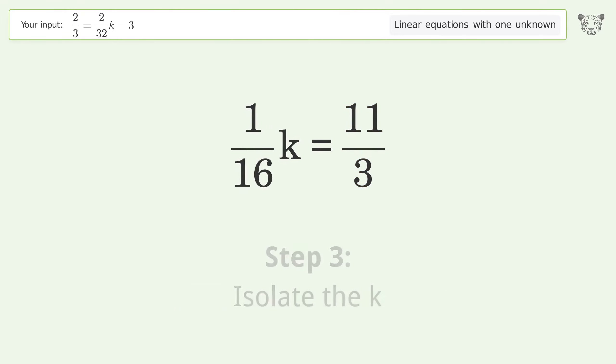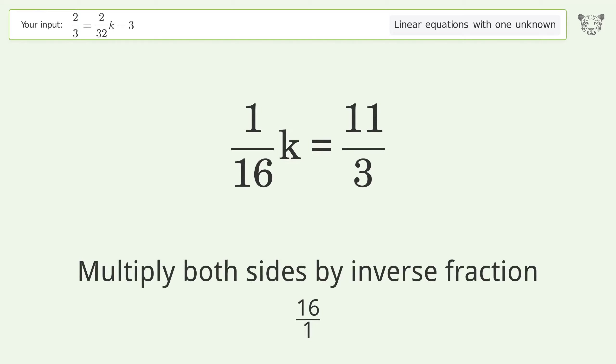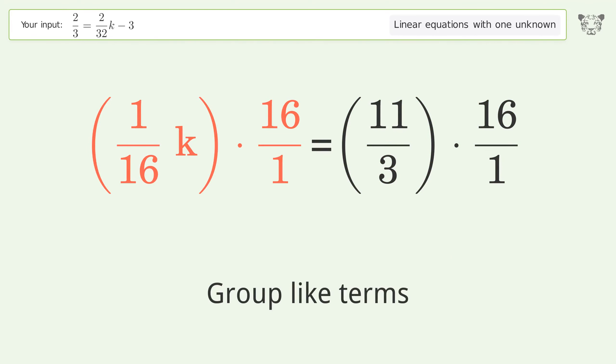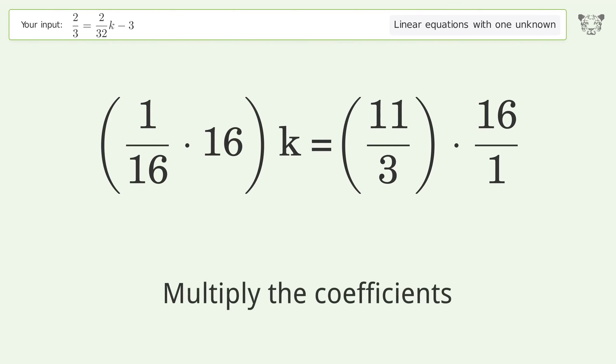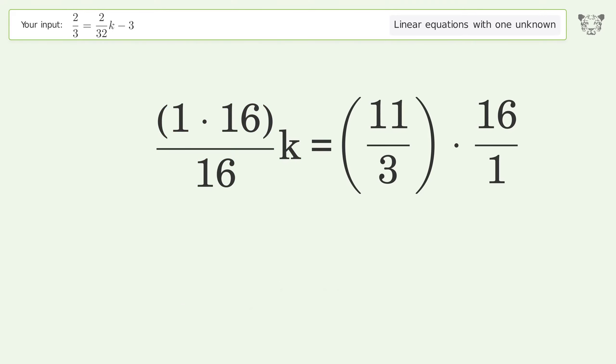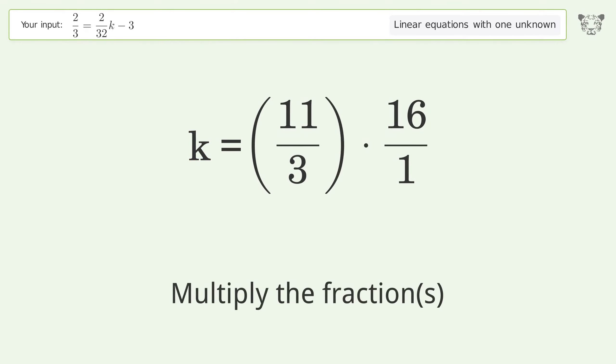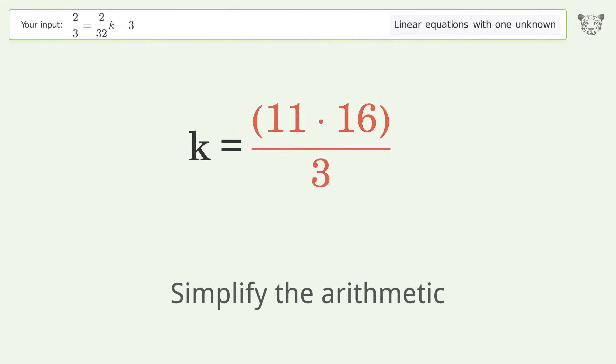Isolate the k. Multiply both sides by inverse fraction 16 over 1. Group like terms. Multiply the coefficients. Simplify the fractions. Multiply the fractions. Simplify the arithmetic.